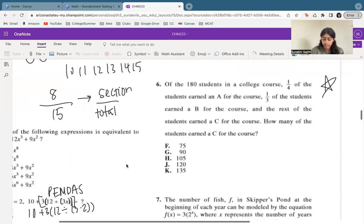Now we've got number 6 here. We've got a fourth earned an A, a third earned a B, and the rest earned C. How many students earned a C? So the easiest way to do this is let's simplify our fractions so they're the same, and then we're going to make that fraction a number. So a fourth of the 180 students earn an A, plus a third of the students earned a B. Now remember, you can use a calculator on this exam.